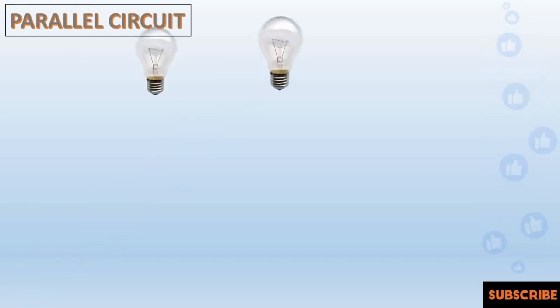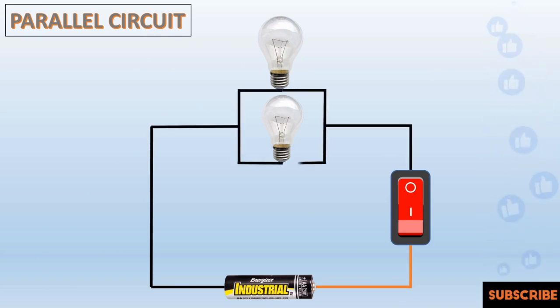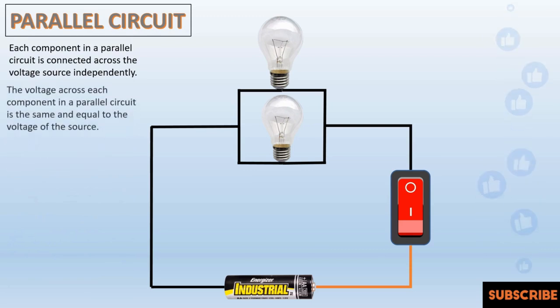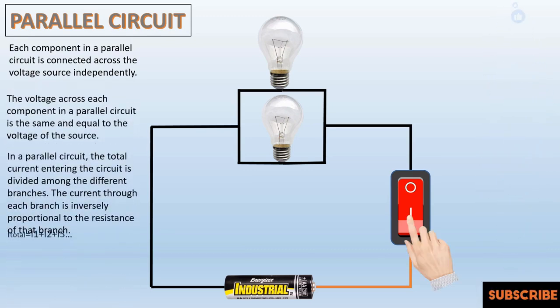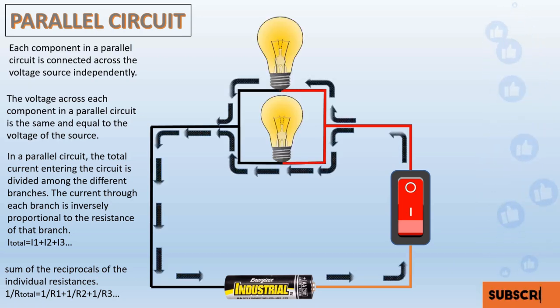In a parallel circuit, each component has its own separate branch connected directly across the voltage source. Multiple paths for current. Unlike a series circuit, a parallel circuit offers multiple paths for the flow of electric current.